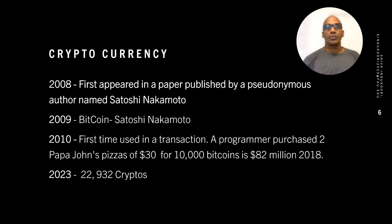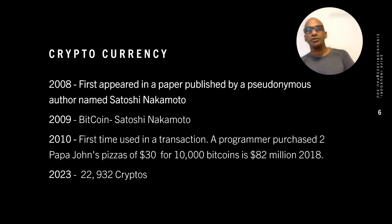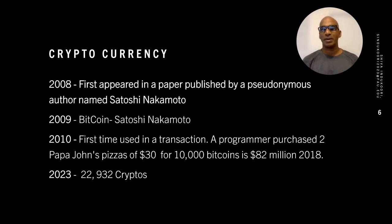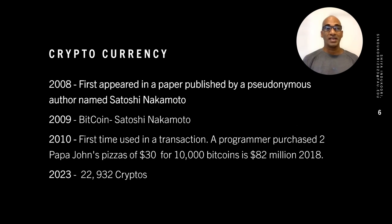Regarding the evolution of cryptocurrencies: the concept and technology were first published in a research paper by Satoshi Nakamoto under a pseudonymous name. It was then issued as Bitcoin. The first crypto transaction ever occurred one year after issuance, when a programmer purchased Papa John's pizzas with 10,000 bitcoins, equivalent to $30 at the time in May 2010 — worth $82 million in 2018.